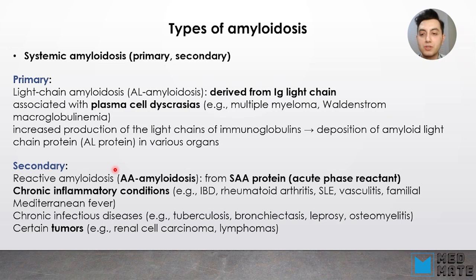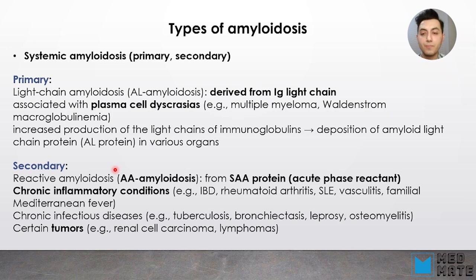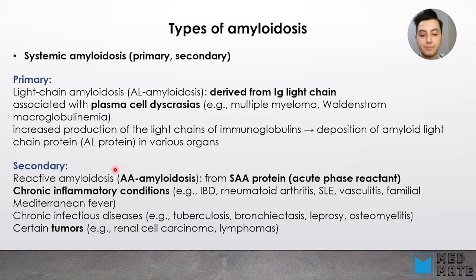The other type is secondary, or reactive, amyloidosis — AA amyloidosis from SAA protein, which is an acute phase reactant. In chronic inflammatory conditions such as irritable bowel disease, Crohn's disease, rheumatoid arthritis, vasculitis, or familial Mediterranean fever, chronic inflammation leads to production of SAA protein, eventually leading to AA amyloidosis. Tumors can also cause secondary amyloidosis because they produce chronic inflammation in our body.